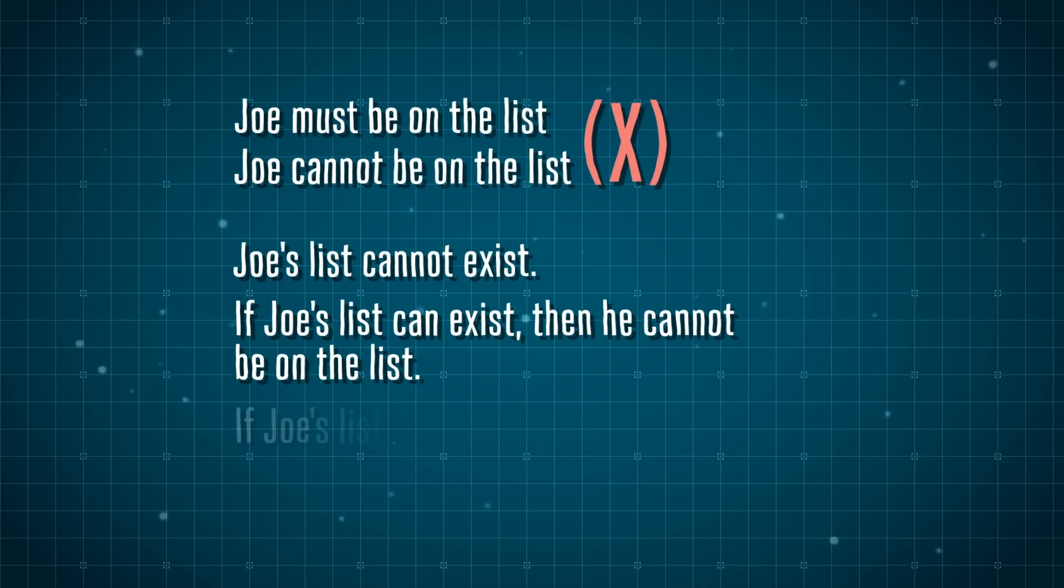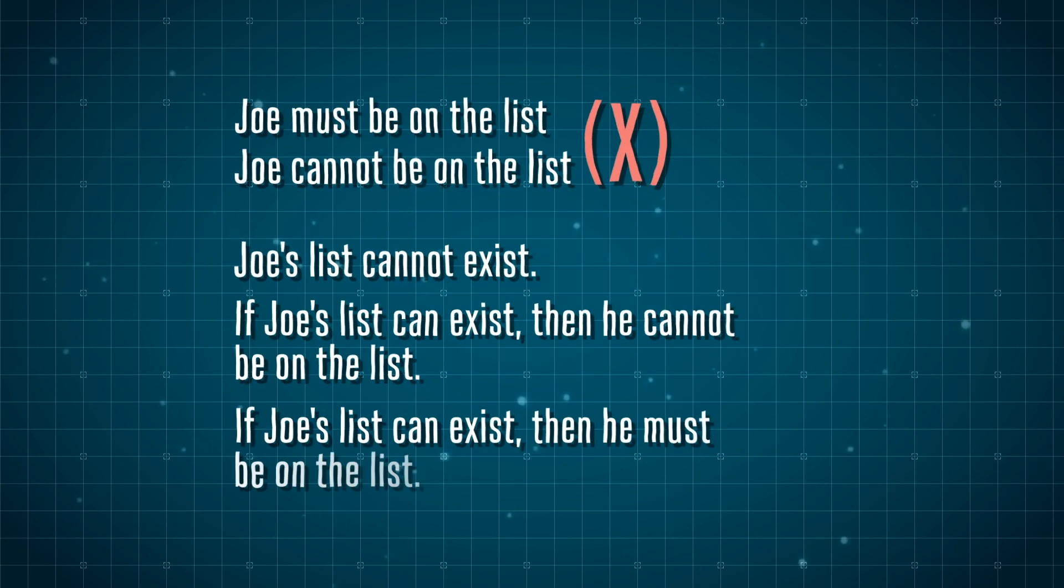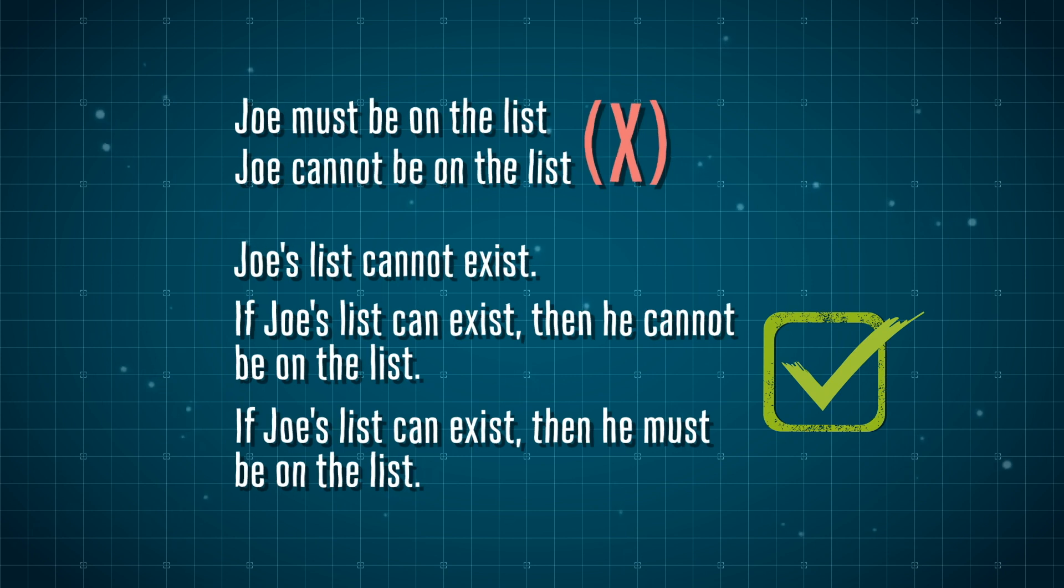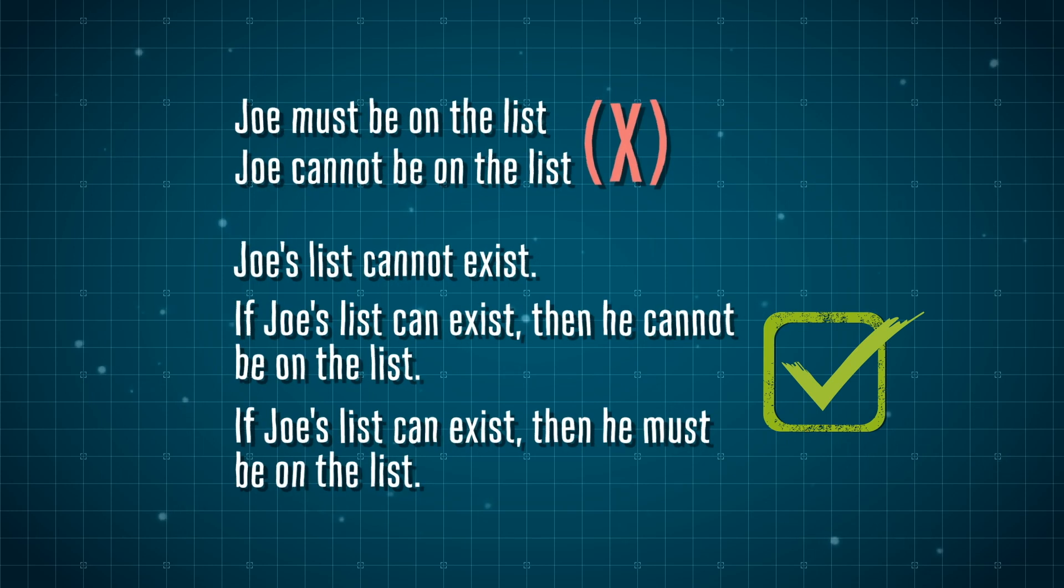Now we can add that to our statements, and it turns out they don't contradict each other because Joe's list can't exist in the first place.